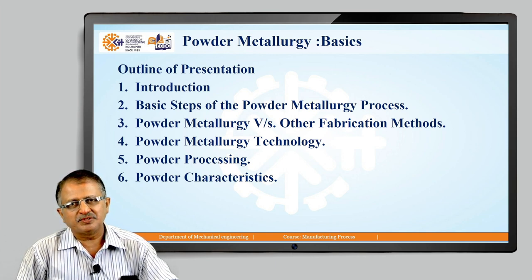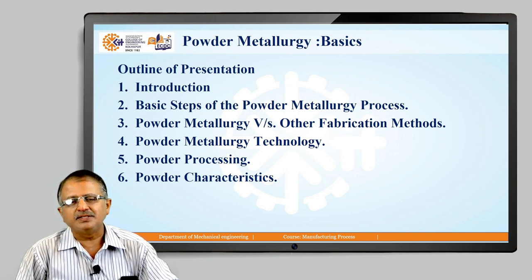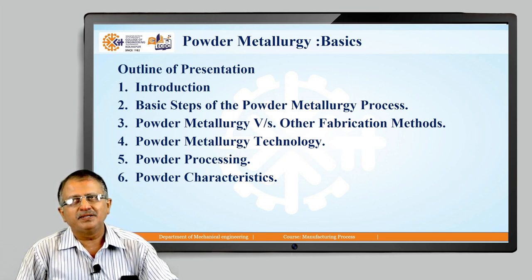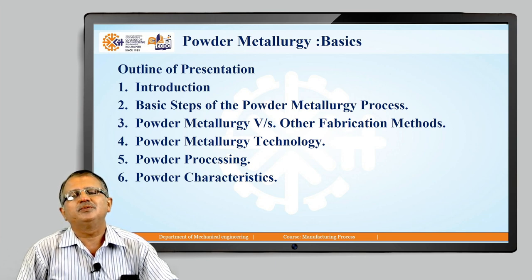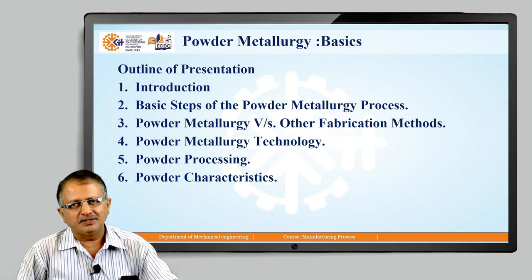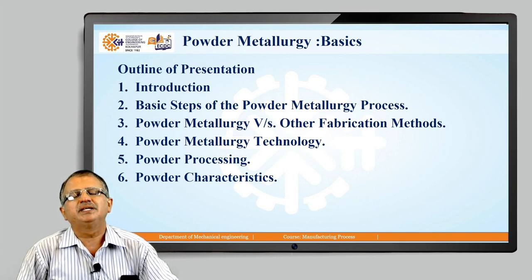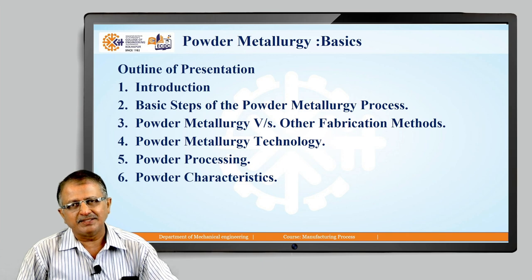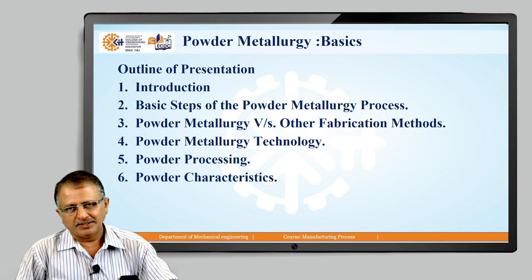Those steps will be discussed in further sessions in detail. After that, Powder Metallurgy, when compared with other conventional methods, scores well and gives more advantages. Powder Metallurgy Technology has two parts: one is Powder Production and the second is Powder Processing. After that, we will see how powder characteristics affect the final product. This is the agenda of today's session.